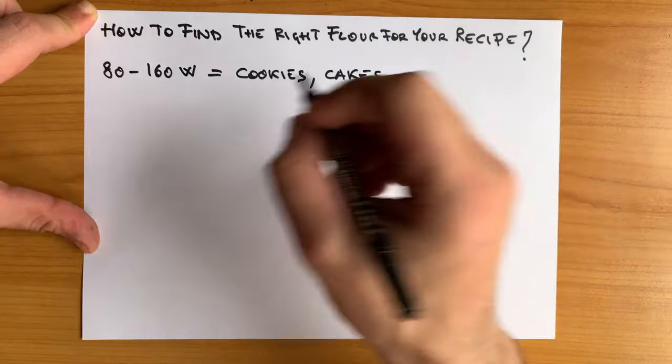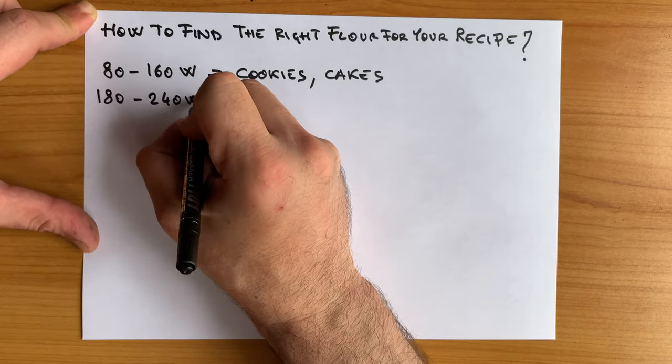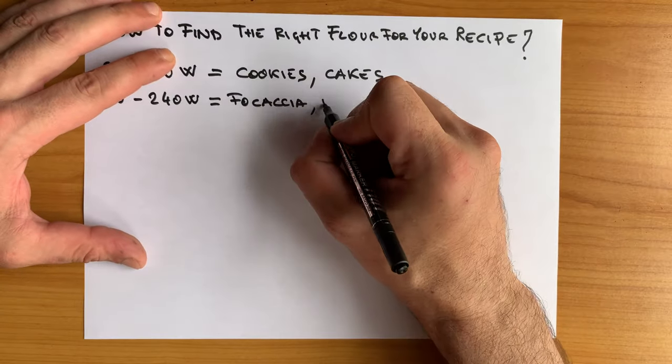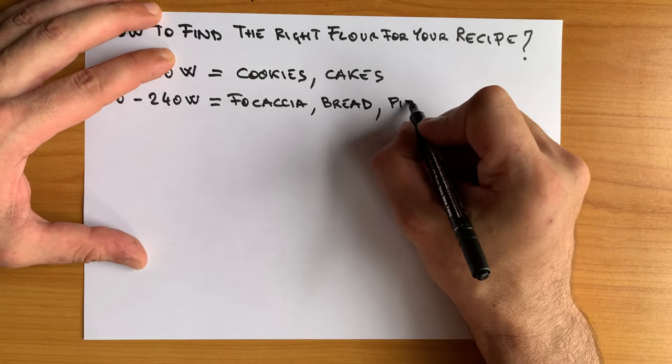80 to 160 W will be fine for cookies and cakes. 180 to 240 for focaccia, bread and pizza.